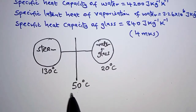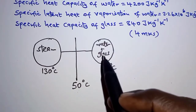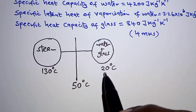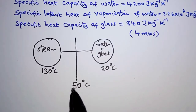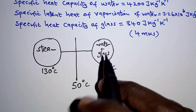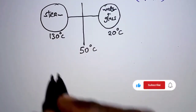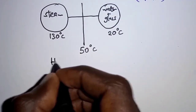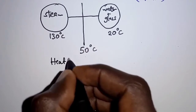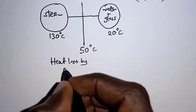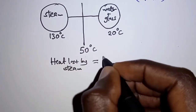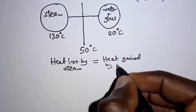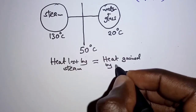Steam will lose heat to water and glass until its temperature gets to 50 degrees Celsius, and water and glass will gain heat as their temperature rises to 50 degrees Celsius. By the principle of conservation of energy, the heat lost by steam is equal to the heat gained by water and glass.